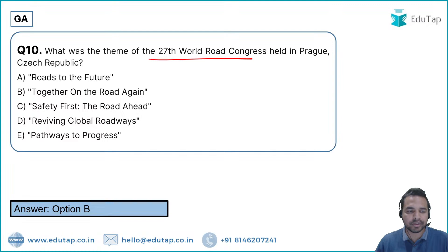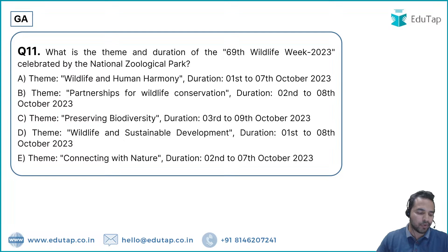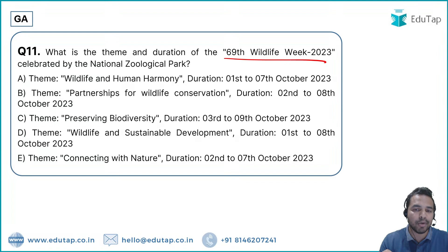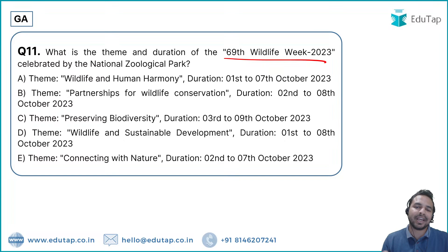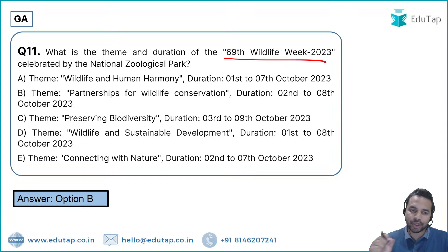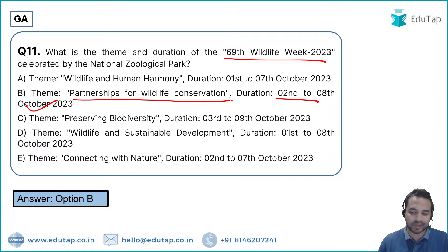Question 12: The 69th Wildlife Week 2023 was celebrated by the National Zoological Park. What was its duration and theme? The duration was 2nd to 8th October 2023, and the theme was 'Partnerships for Wildlife Conservation.' Option B is the correct answer.